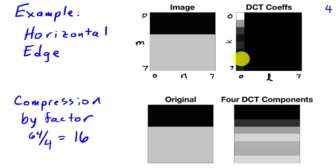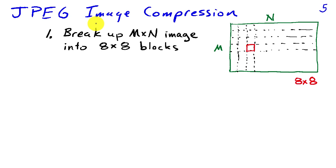And this is the basis behind JPEG. In JPEG, when we compress an image, we're going to break up some arbitrary large m by n image into 8 by 8 blocks, as I've illustrated in this graphic.